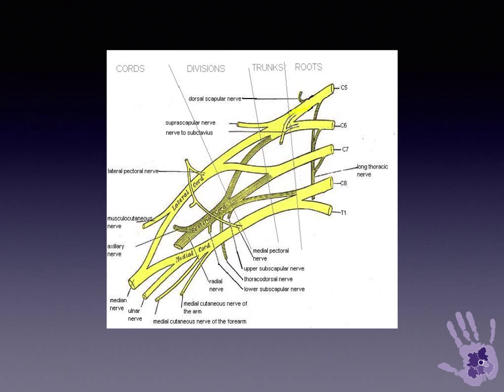C8-T1 gives innervation posteriorly, providing posterior cord innervation of triceps, and also wrist and finger extension. The main continuation of C8-T1 produces the ulnar nerve, giving ulnar hand intrinsics and FDP function to the ulnar side of the hand, and also the medial head of the median nerve, which carries fibres for the anterior interosseous nerve function, FDP to the radial side of the hand, and the median-innervated hand intrinsics.